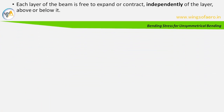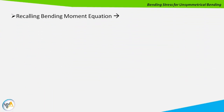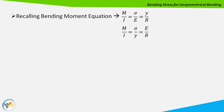Next, recall the bending moment equation: M/I = σ/E = y/R. Here, M is the moment about any point, I is the second moment of inertia, σ is the bending stress, E is Young's modulus, y is the distance of the point from the neutral axis, and R is the radius of curvature.